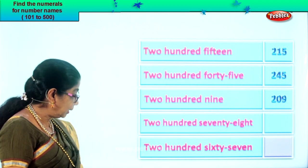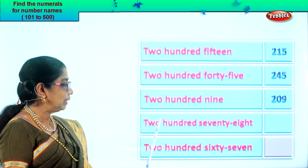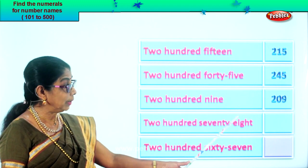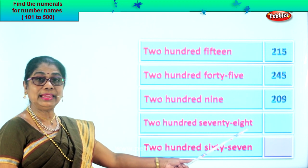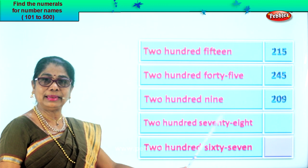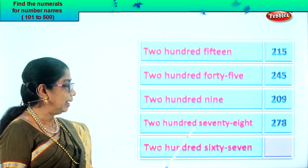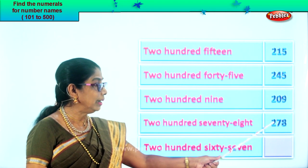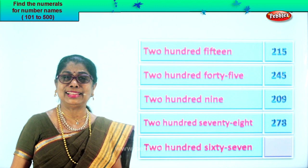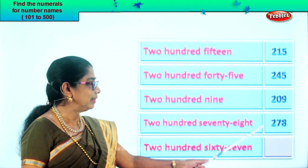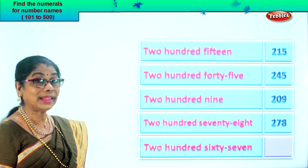Shall we take the next number name? Two hundred seventy-eight. Two in the hundredth place, seven in the tens place, eight in the ones place. Two hundred seventy-eight — you put seven and eight with two hundred. As you read, put down the numeral. That's it — very interesting, isn't it? Two hundred seventy-eight.